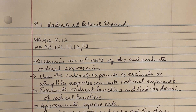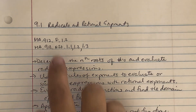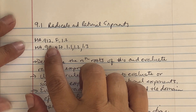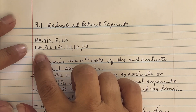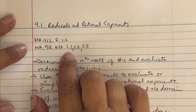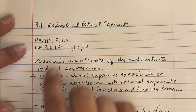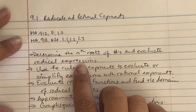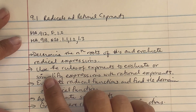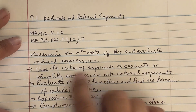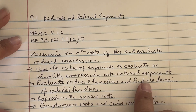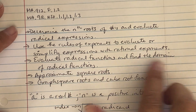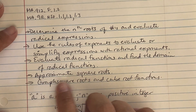9.1 Radicals and Rational Exponents, standards MA912F1.2, MA912NSO1.1, 1.2, and 1.3. We're going to determine the nth roots of numbers and evaluate radical expressions. We're going to use the rules of exponents to evaluate or simplify expressions with rational exponents. We're going to evaluate radical functions and find the domain of radical functions, approximate square roots, graph square roots, and cube root functions.